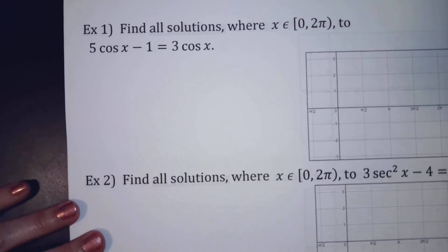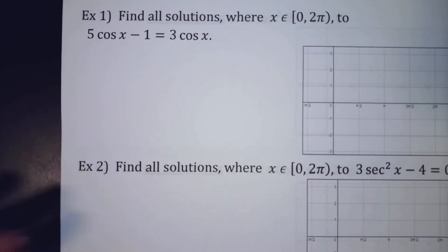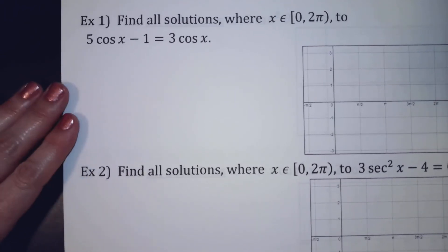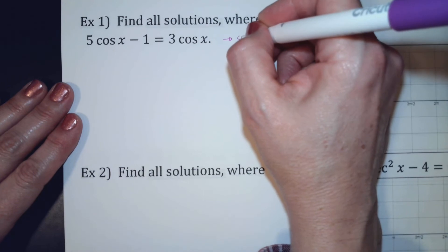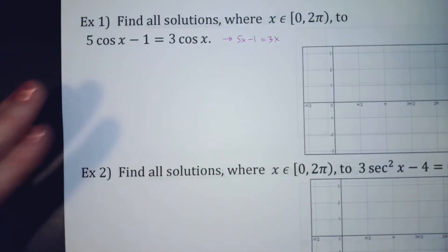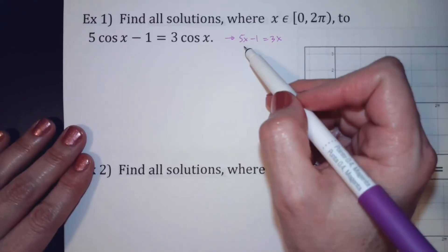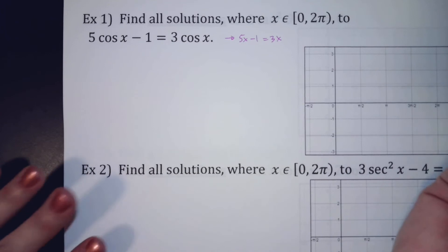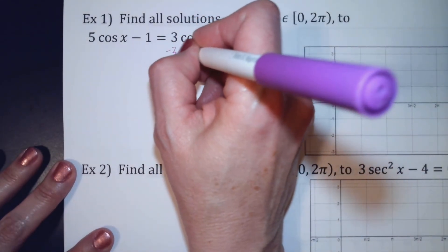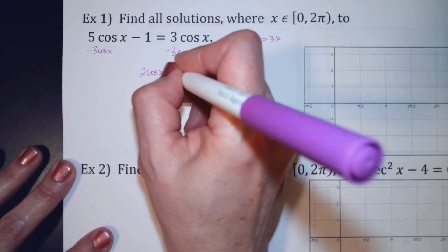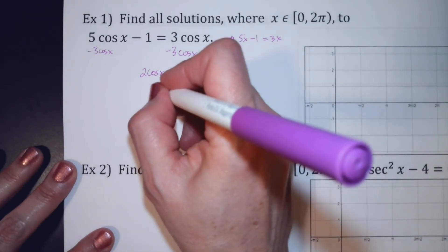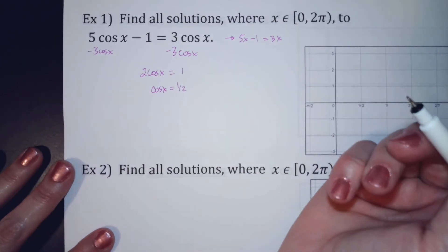So you can always kind of take it back to an algebra problem. If cosine x is my x, this would be similar to 5x minus 1 equals 3x. I would get the x's on one side, the numbers on the other, and then solve for x. So we're going to take away 3 cosine x. I'll move the 1 to the other side, so I get 2 cosine x equals 1, and cosine x equals 1/2.